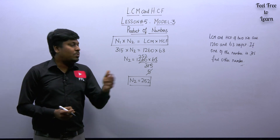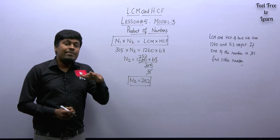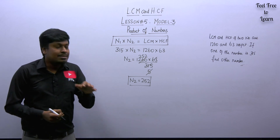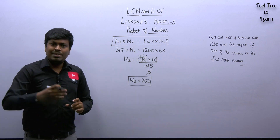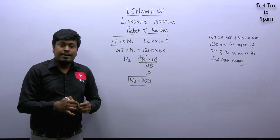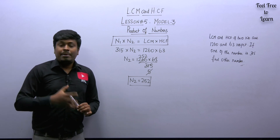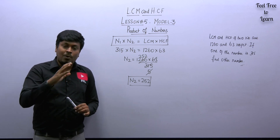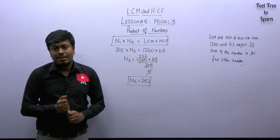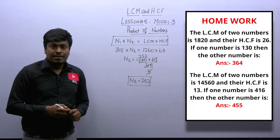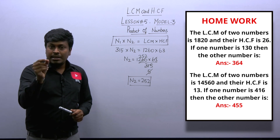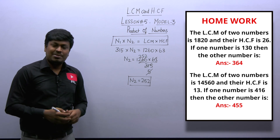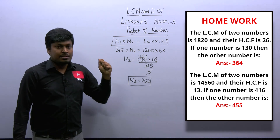It's very simple once you understand the concept of product of two numbers. Please don't rote-learn formulas in LCM and HCF — that is completely wasteful. Instead, understand the concept. There are nearly 12 models in LCM and HCF; you should not memorize all 12 formulas. If you understand the concept, none of those formulas are required. Product of two numbers equals LCM × HCF — that's model number three.